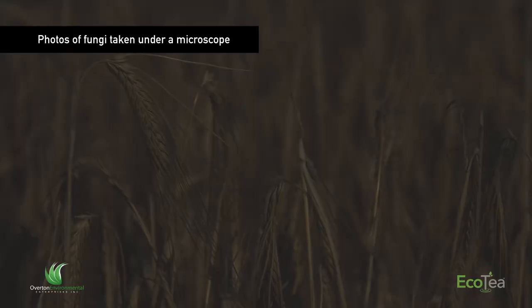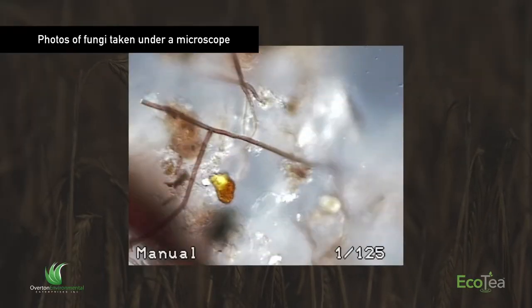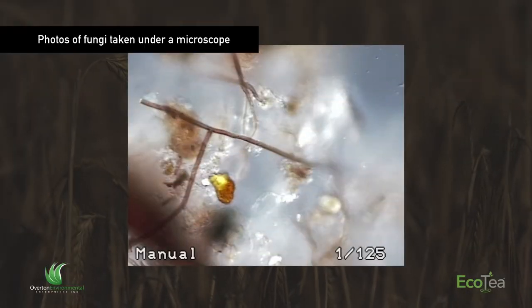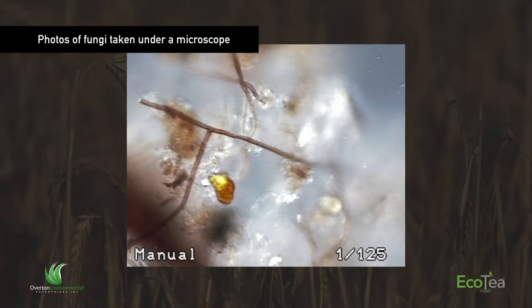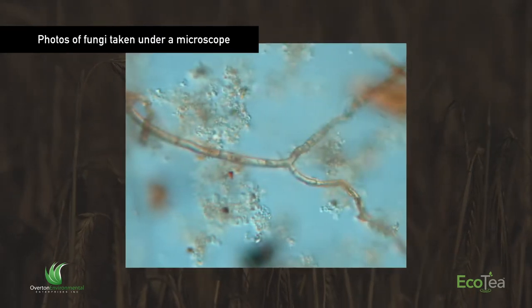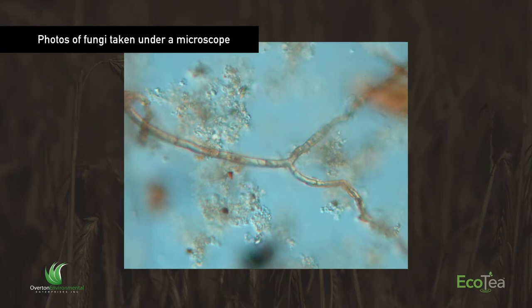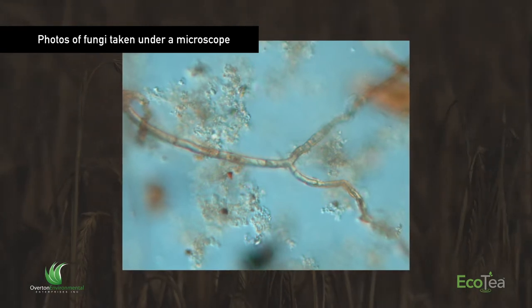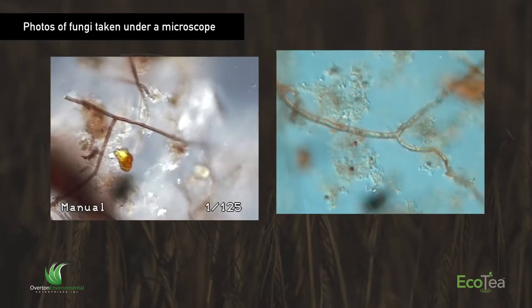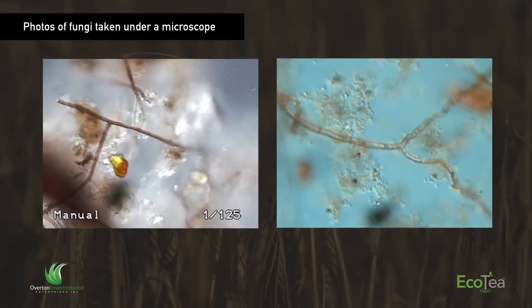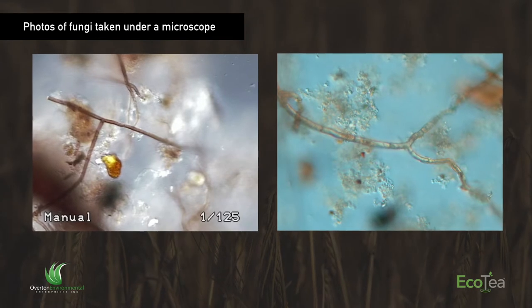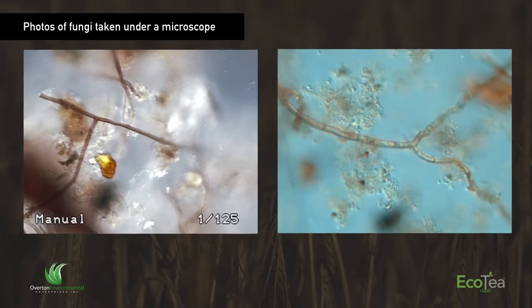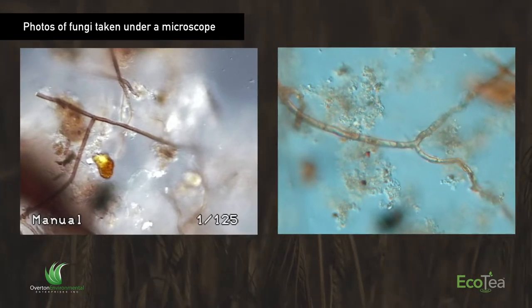Fungi are very sensitive organisms — tillage really impacts fungi because they grow structures called hyphae that develop into mycelium, and when you till, you break and fragment those fungi. Done enough, it basically kills them and you lose that function in your soil. Only about two percent of fungi fall into the pathogen category; ninety-eight percent of all fungi are actually beneficial and have an important role in the ecosystem.